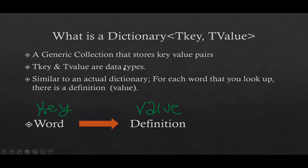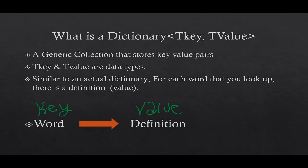So let's jump into this presentation. What is a dictionary? A dictionary is a generic collection that stores key-value pairs. You can think of a collection as something that holds a series of values, such as a list or an array — for example, an array can hold a series of integers, strings, or any data type. A generic collection allows the class to work with any type, denoted by the uppercase T.